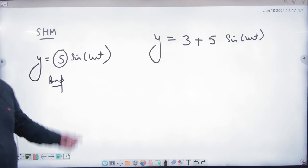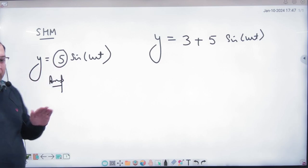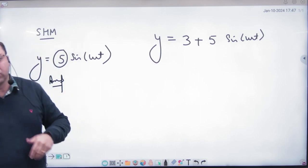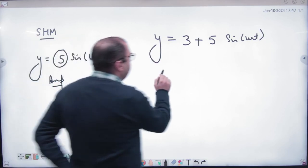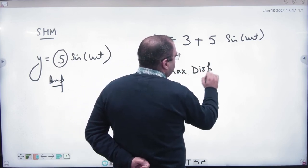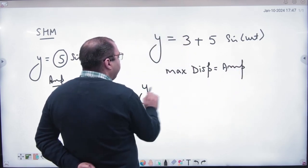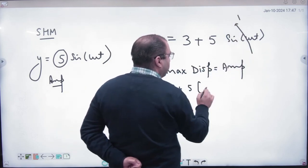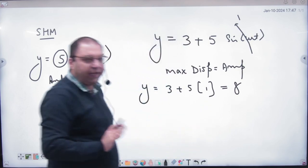The question is that SHM is given with this amplitude, and if you ask the amplitude, then amplitude is 5. But if you look at this equation and ask the amplitude, what will be the answer? Amplitude means maximum displacement. So if you ask the math — if you ask the value of y maximum — then put the value of sin theta maximum, which gives the answer: 8.